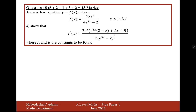So we've got to use the product rule on the numerator, the chain rule on the denominator, and then we've got to use the quotient rule for this overall function. We're going to start off with the differential of the numerator — the differential of u. In the quotient rule, we'll call the top u and the bottom v. So the differential of u is going to be 7e to the x plus 7xe to the x.